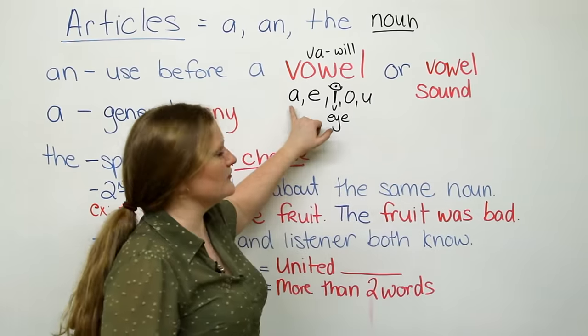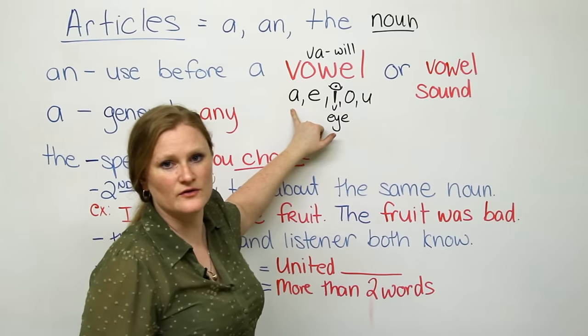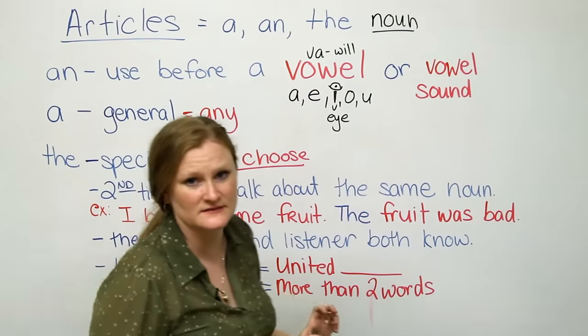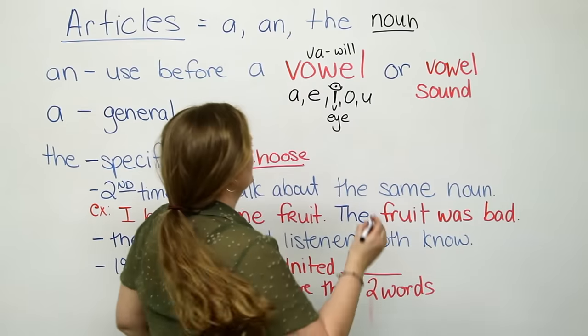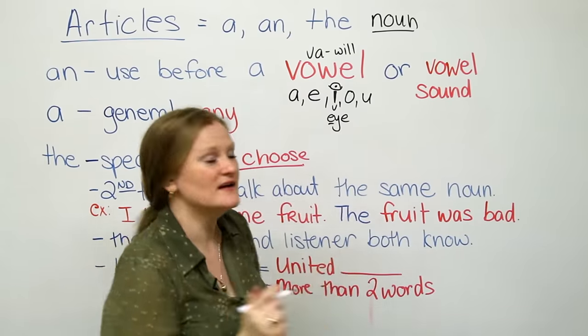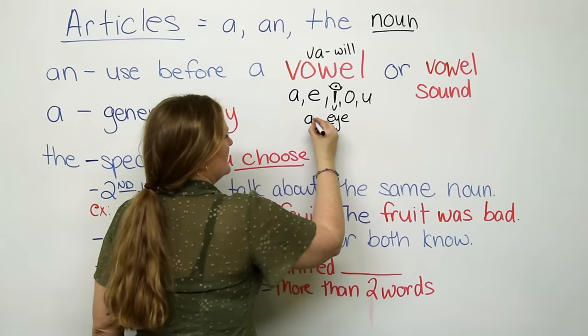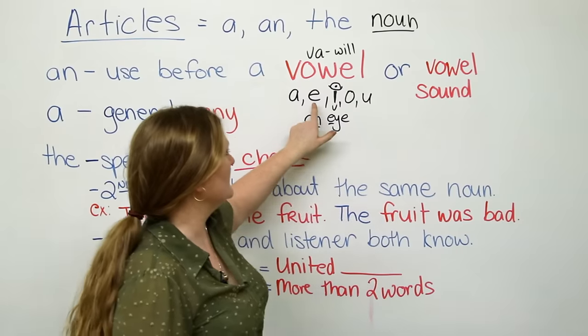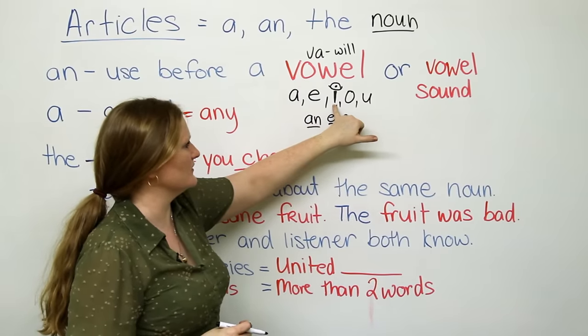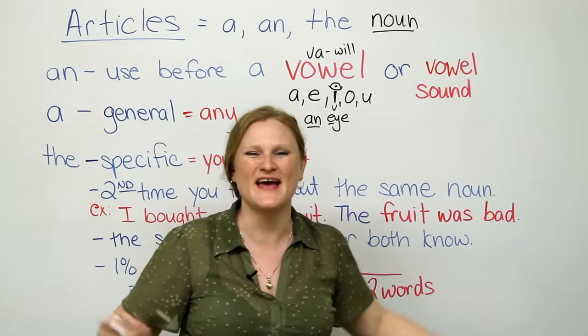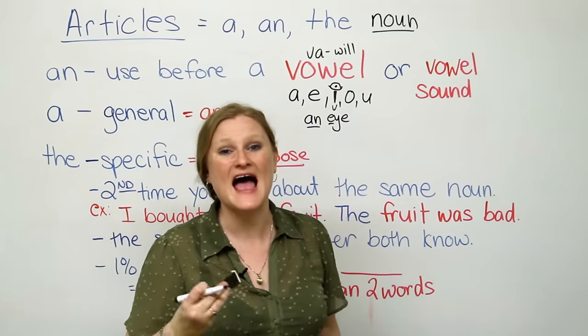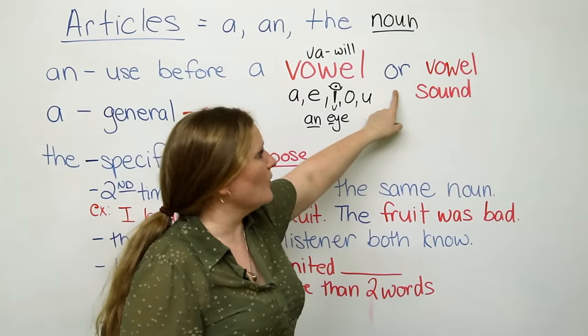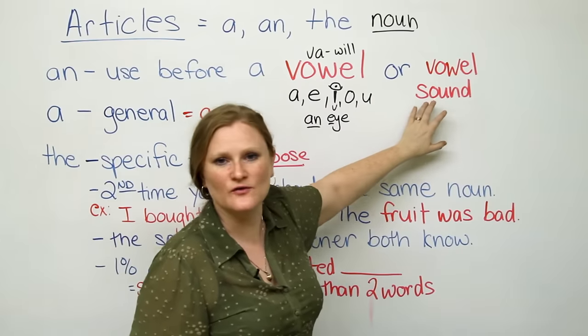So, if you have a vowel, A, E, I, O, U, that begins the noun, you have to use an. For example, I. Yay! We have to say an I because the word I begins with a vowel. If the word begins with this word, with this letter I, for example, ice cream. Yay! We have to say, I'd like an ice cream. Do you like ice cream?